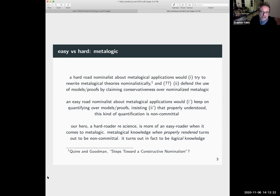An easy road nominalist about metalogical applications would keep on quantifying over models and proofs insisting that properly understood that's non-committal. So our hero Hartree, our leader, is a hard roter re-science. He's more of an easy roter when it comes to meta logic. Metalogical knowledge, when properly rendered, turns out to be non-committal.